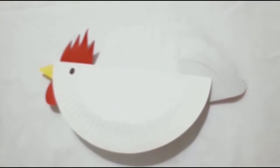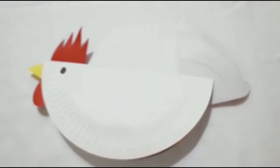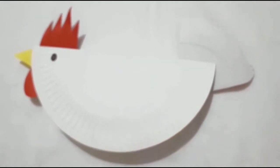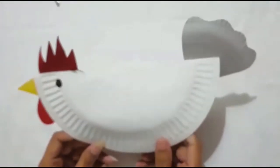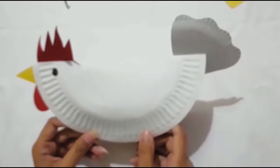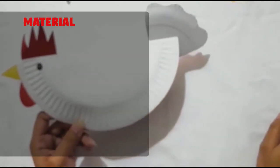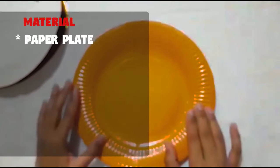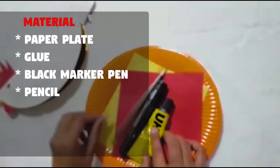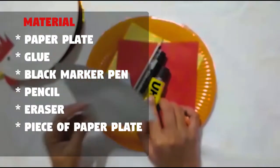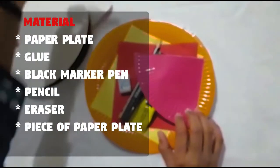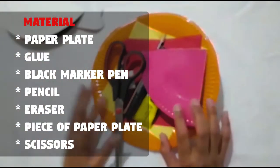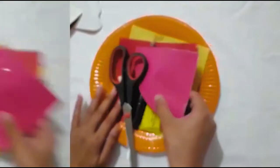Asalaamu Alaikum students, hope you are doing good. Today's activity is a paper plate rocking hen. Here is the sample which I have prepared for your convenience. The material which is required for this activity is a paper plate, glue, black marker pen, pencil, eraser, quarter piece of paper plate, and scissors.